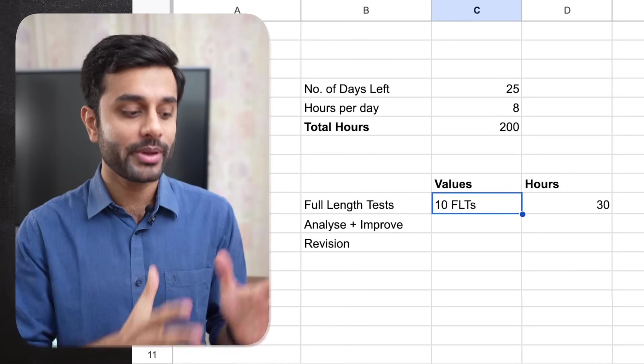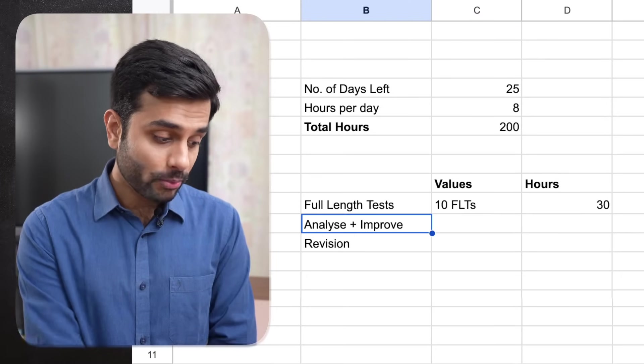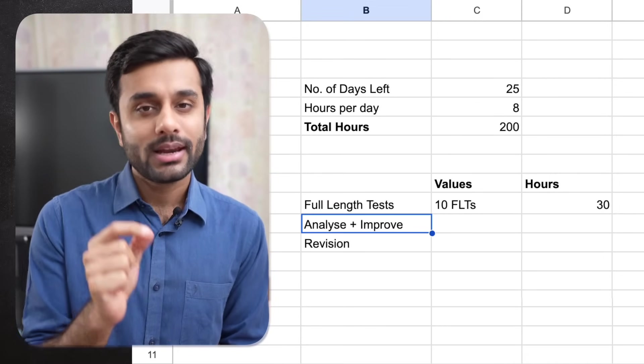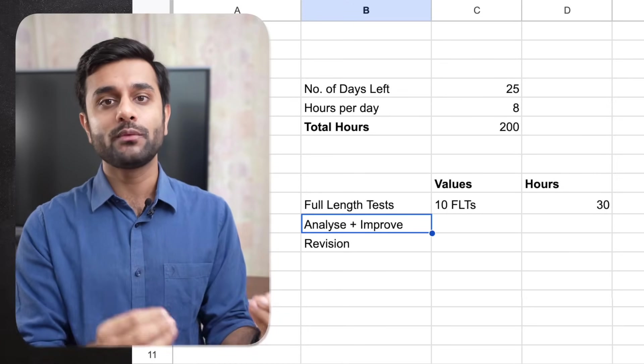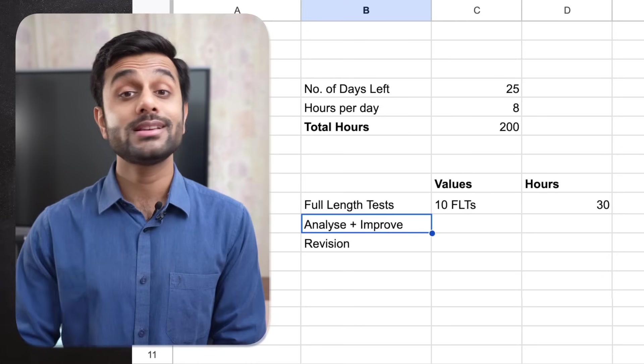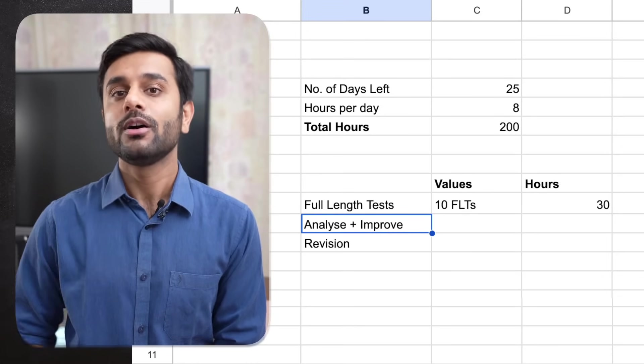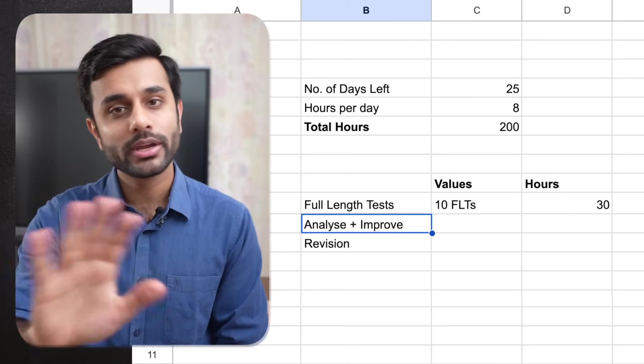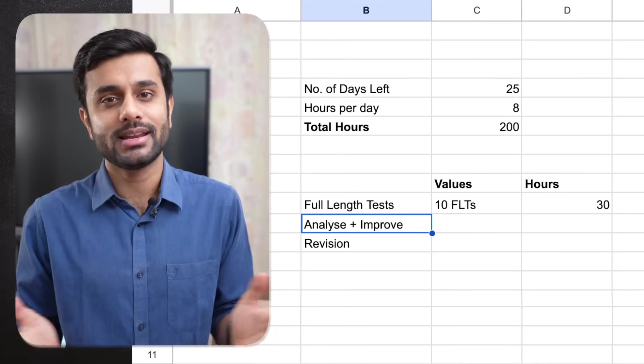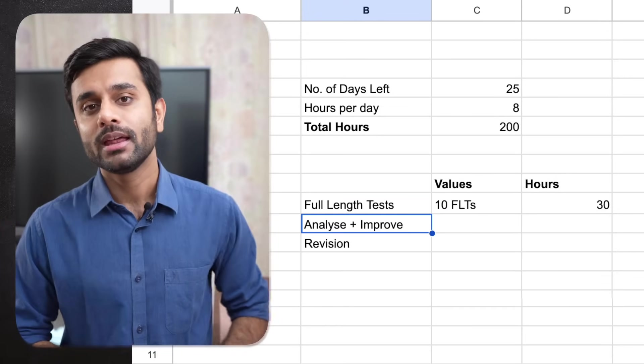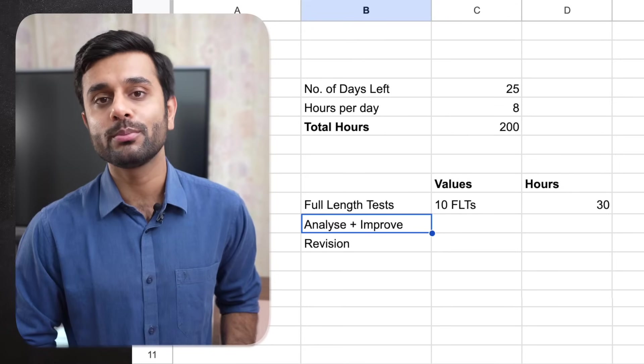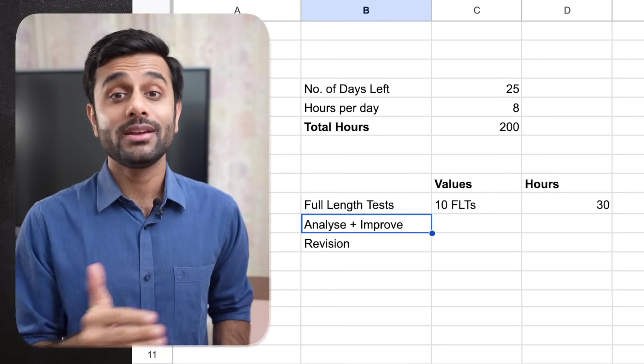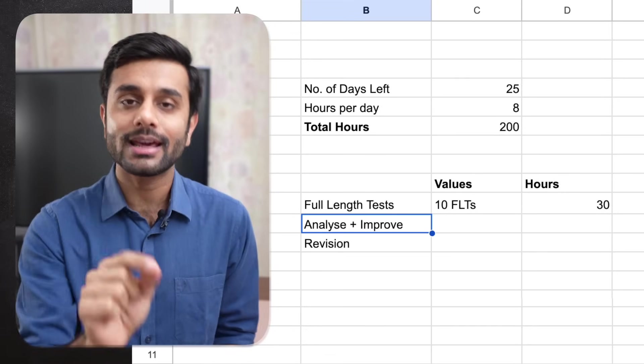Coming to second point which was analysis plus improvement. Analysis plus improvement, as I told you and I'm repeating it here, means if you are writing full length test without analyzing - suppose there's a student who is writing one full length test daily, almost 30 FLTs he has written - but he's not analyzing where his weak areas are, what numerical solving skills he needs to build, how to plan for those 3 hours. If he's not focusing on that, only blindly writing FLTs, it's going to make no difference.